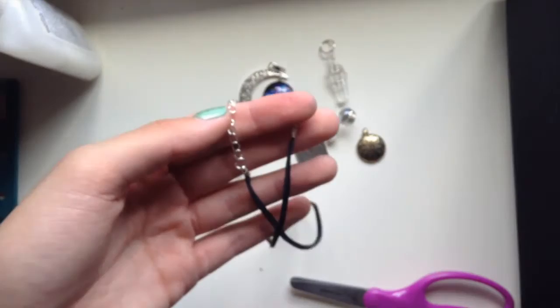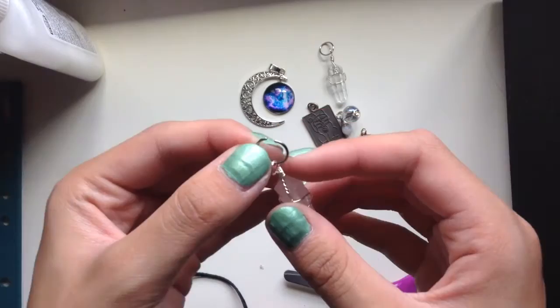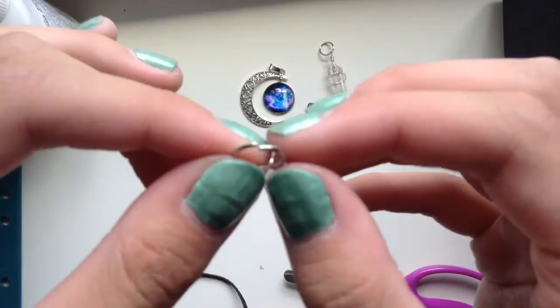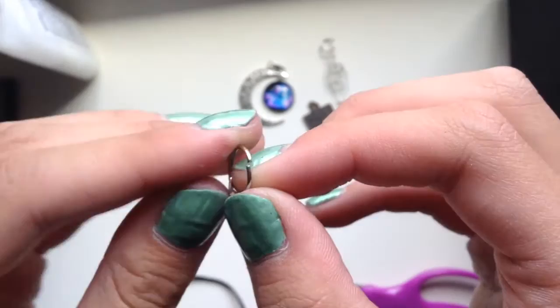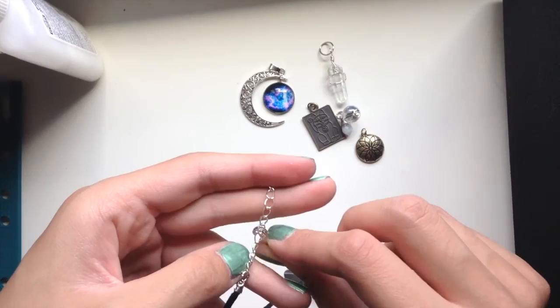You're gonna pick a charm of your choice, and you're going to loop it through the jewelry loop. Once you loop it through, you're going to squeeze the ends of the loop tightly together so that they're touching and the charm won't fall out of it. Once you've done that, all you have to do is take the necklace and loop it through the charm of your choice. That's it and you have your suede cord choker.